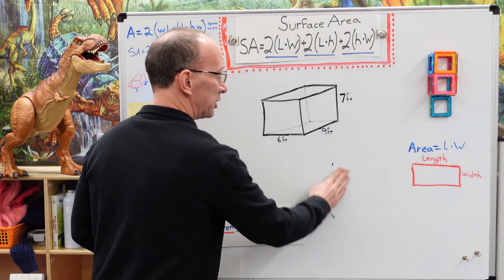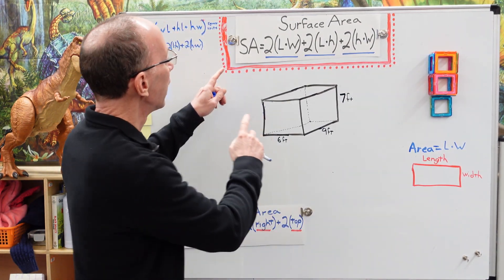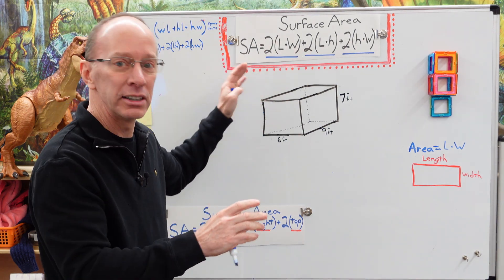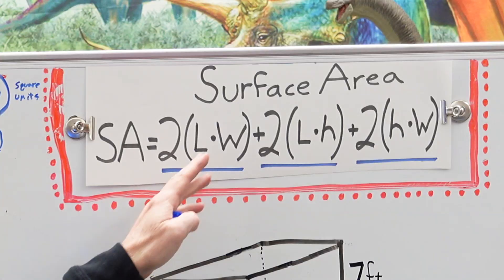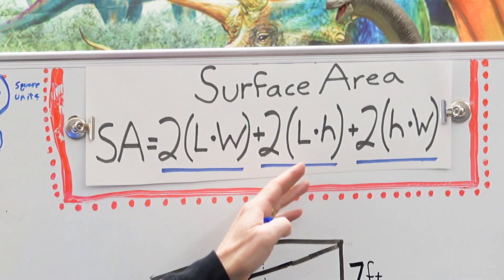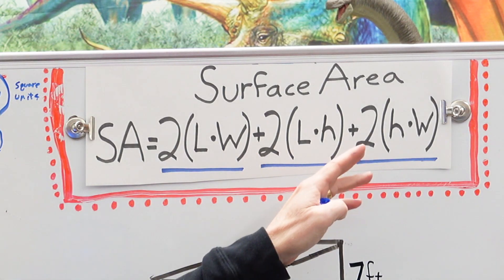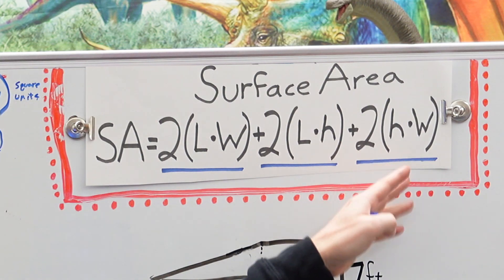Okay, let's begin here. If you checked out my other videos, the surface area, here is the formula of the surface area. That is two times the length times the width plus two times the length times the height plus two times the height times the width.